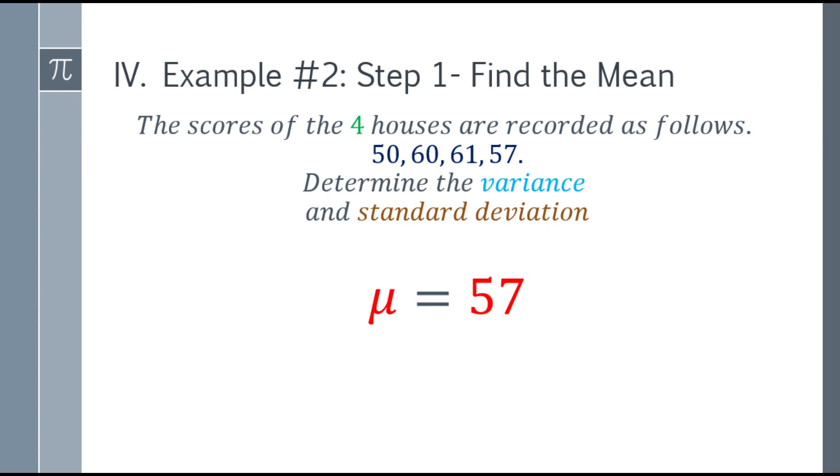Add the 4 numbers. 50 plus 60, plus 61, plus 57. 228 is the answer, divide by 4. The answer here is 57. So that's the mean.